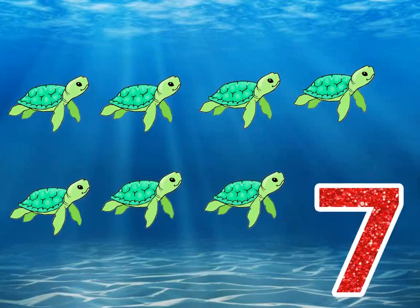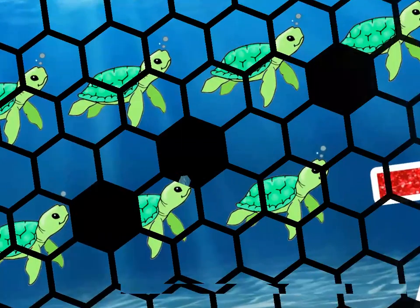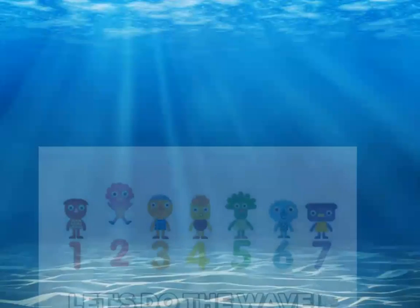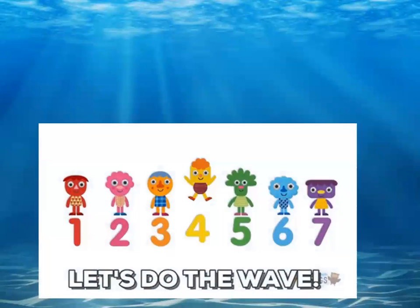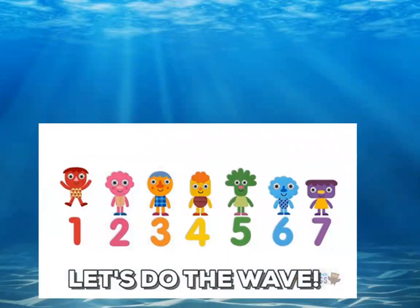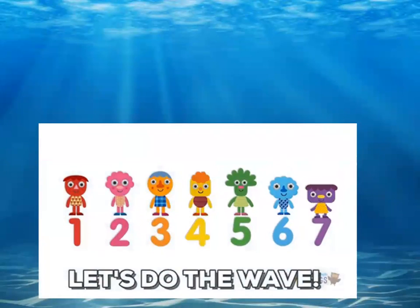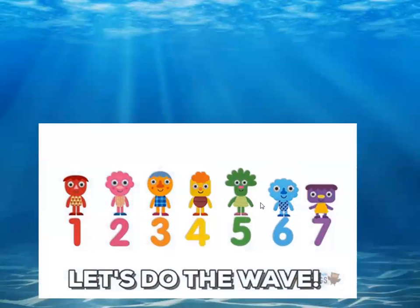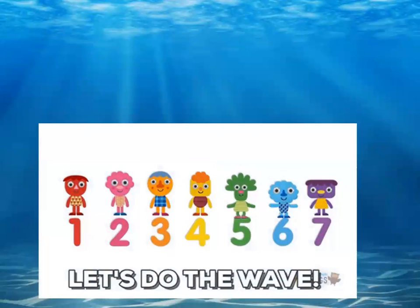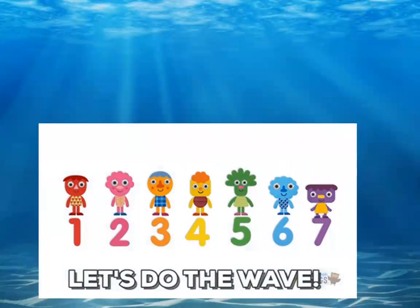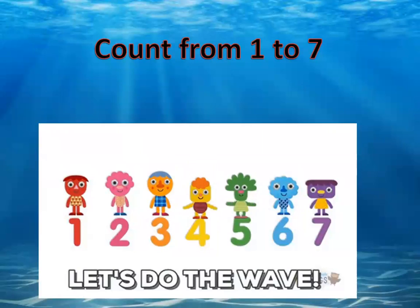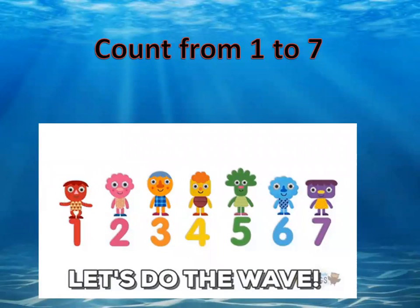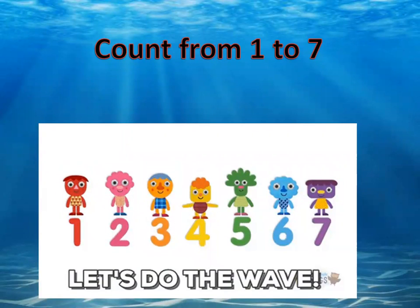How many fish do you see here? Let's count: one, two, three, four, five, six, seven. Let's do counting from one to seven with a song: one, two, three, four, five, six, seven — one, two, three, four, five, six, seven. Very good! Now count it alone. Well done.